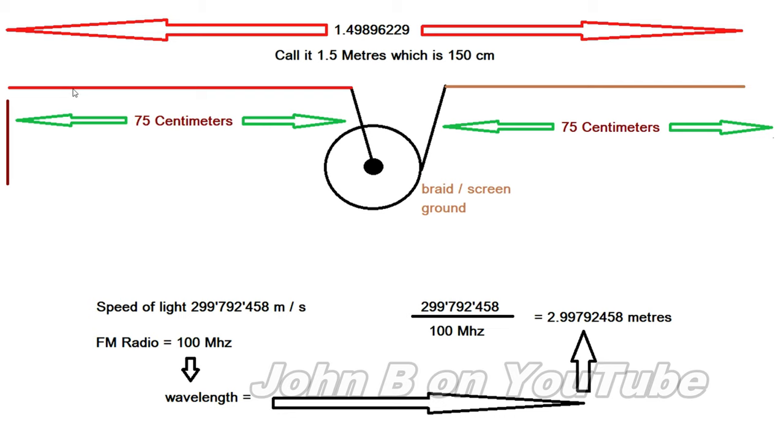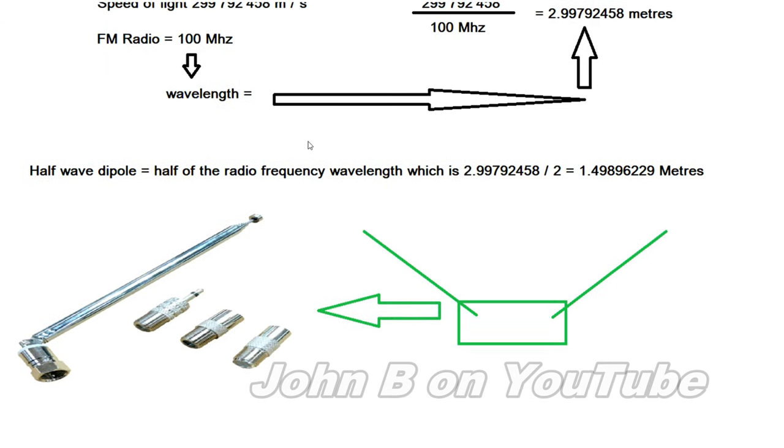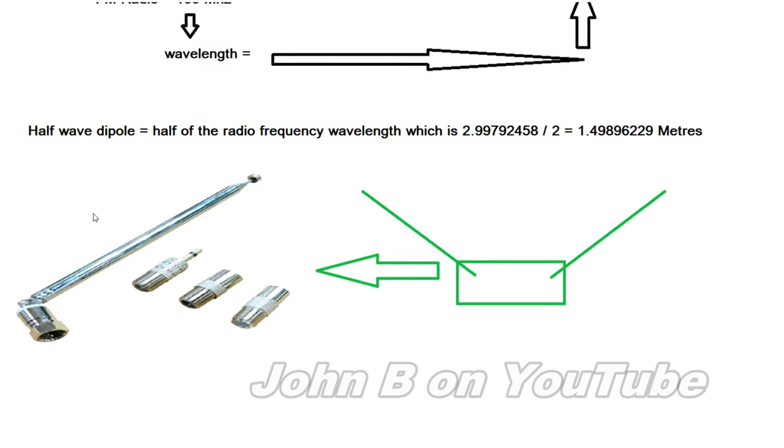So you've got to take that into account. I had a look on eBay and there's a few people selling these telescopic aerials. I mean to make it ideal this wants to be a quarter of the wavelength. So 75 centimeters. Take two of those, put it in a box, have one as your center core pointing one direction and the ground pointing the other.